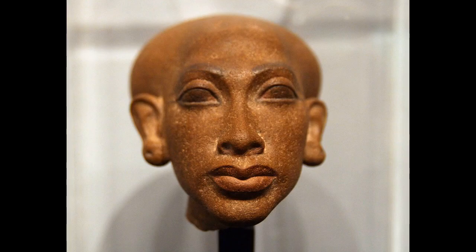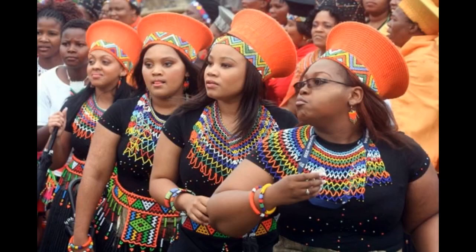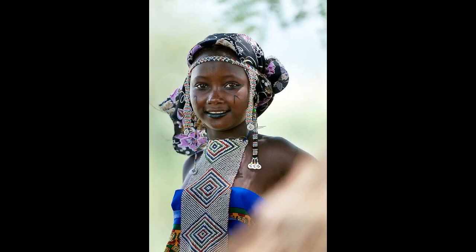Royal mummies from the Amarna period in ancient Egypt have genetic STR profiles that clearly cluster with sub-Saharan Africans, particularly from the Great Lakes region around Uganda, Burundi, and Rwanda — which would include tribes such as the Tutsi and Hutu people — as well as with southern Africans, which would include Bantu tribes like the Shona, the Zulu, and the Ndebele. These mummies also show genetic affinities with western Africans from around the region of Cameroon.